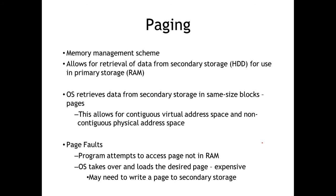A page fault simply means the program needs to access part of its code that isn't loaded into primary memory, so it has to load it up. If it has to pull that from disk, it slows the process down a little bit — it's expensive, because the CPU has to fetch that data from the hard drive instead of from RAM, which is a lot faster.